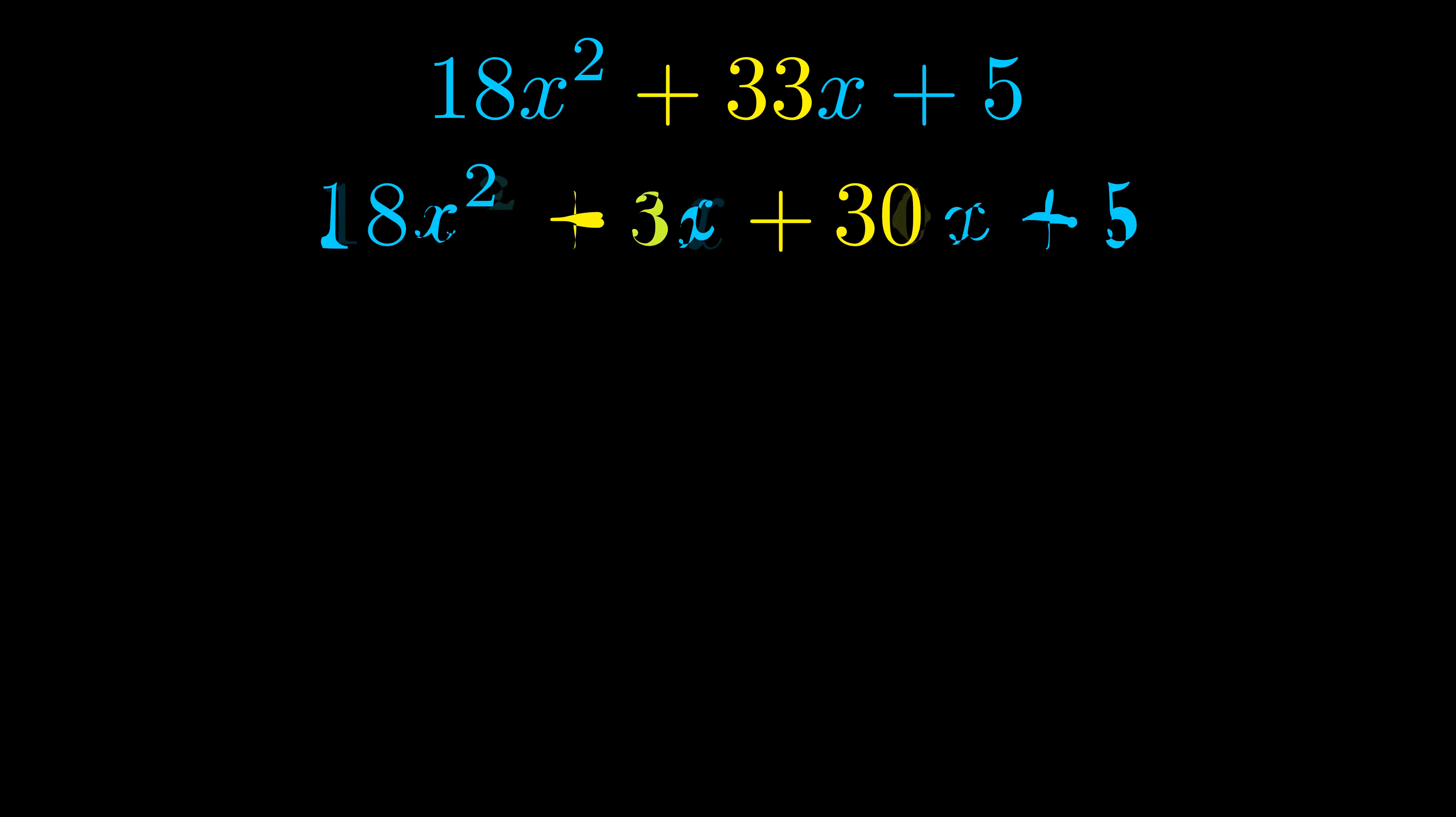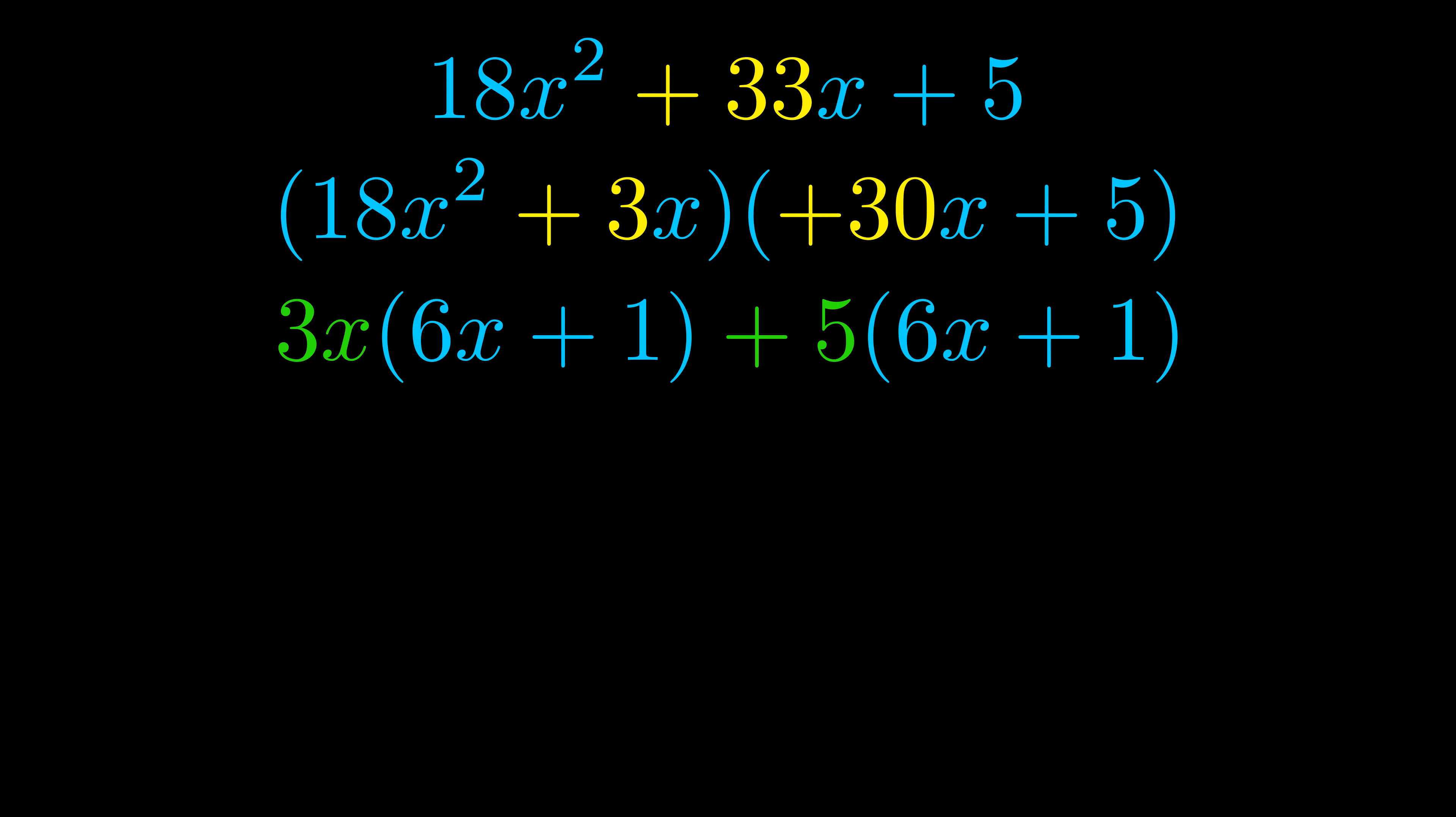Once we've done this we go ahead and we put parentheses around the first term and the last term. And we do that so that we can take the greatest common factor out of both terms. We can see the greatest common factor is now outside in green. Notice also how what remains inside of the parentheses is the same in both cases.